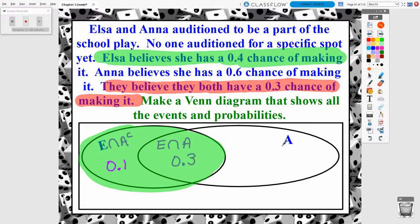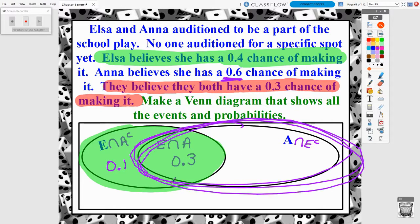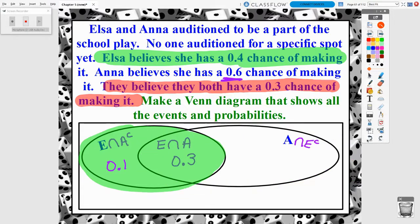So now we've got to do the same thing over here for Anna. So this A represents that Anna makes it, and Elsa now does not make it. And again, we were told that Anna has a 60% chance of making it. And so we've already talked about in the Anna bubble that there's a 30% chance that Anna will make the play at the same time that Elsa also makes the play. So what's the probability? How much leftover percent out of this 60 does Anna have that Elsa will not make it? And so it still represents a 30% chance here. This 30% plus this 30% gives us that overall 60% chance.